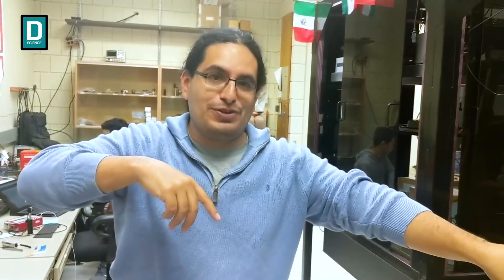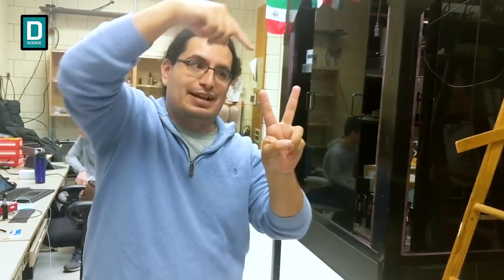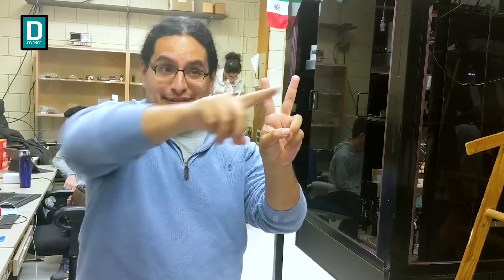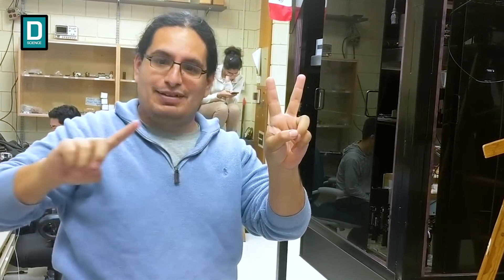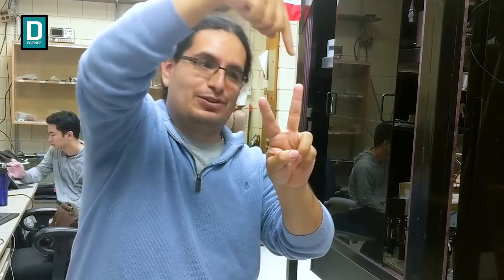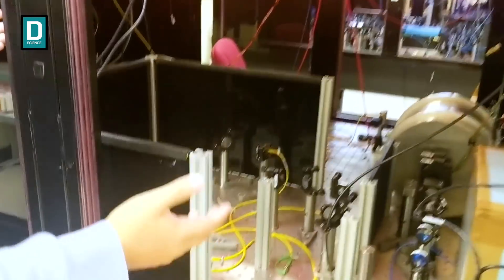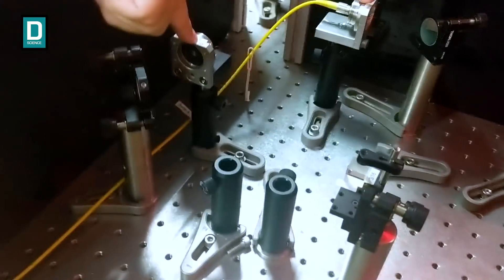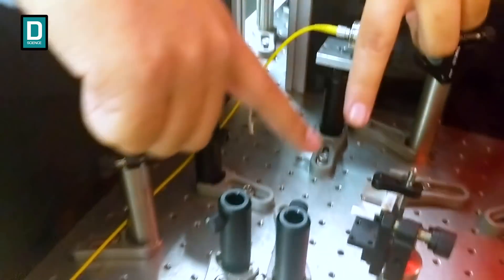To entangle photons, we produce them there, and then we store them in the memories here and here. Now we're going to have a qubit produced in that lab coming here, and we need to do a measurement here in order for the qubit produced there to be teleported to this other place. One of the entangled pairs comes in here — this is where we do the measurement and determine the outcome.